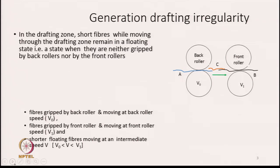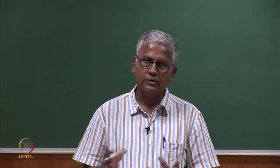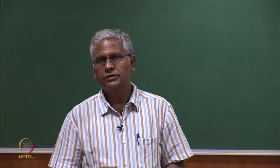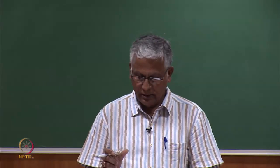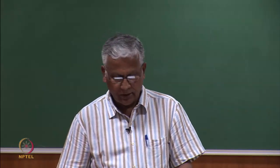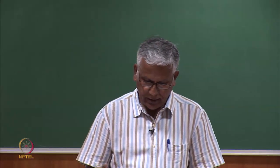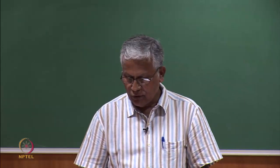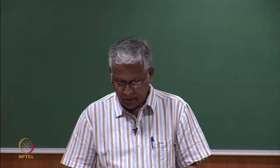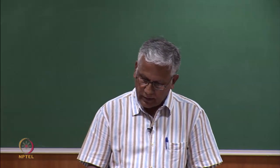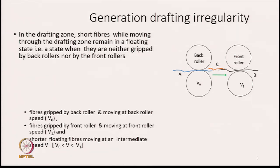When discussing roller arrangement, we should first know the cause or reason behind the generation of drafting irregularity, because the purpose of the arrangement is to address this aspect. So we will discuss it briefly now and in more detail later. Here you see a drafting zone consisting of two pairs of rollers.